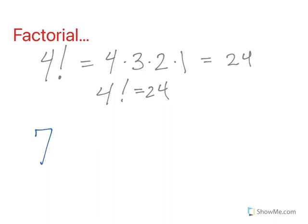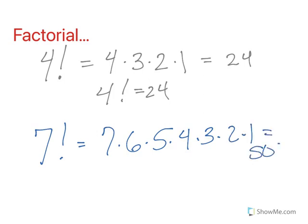So if I said seven factorial, that's the same as seven times six times five times four times three times two times one, which is 5040. So seven factorial equals 5040.